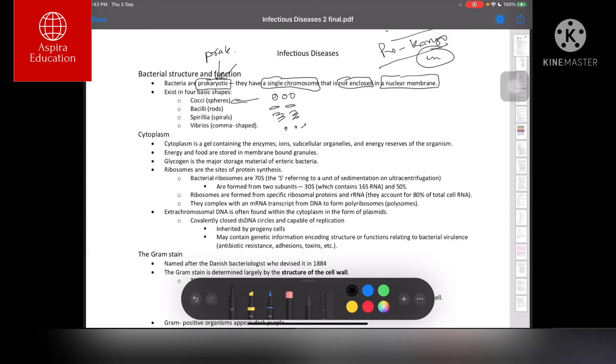Their cytoplasm is basically a gel containing many chemicals including enzymes, ions, and organelles. The way bacteria generate, conserve, and utilize energy—the energy machinery is lying freely in the cytoplasm.